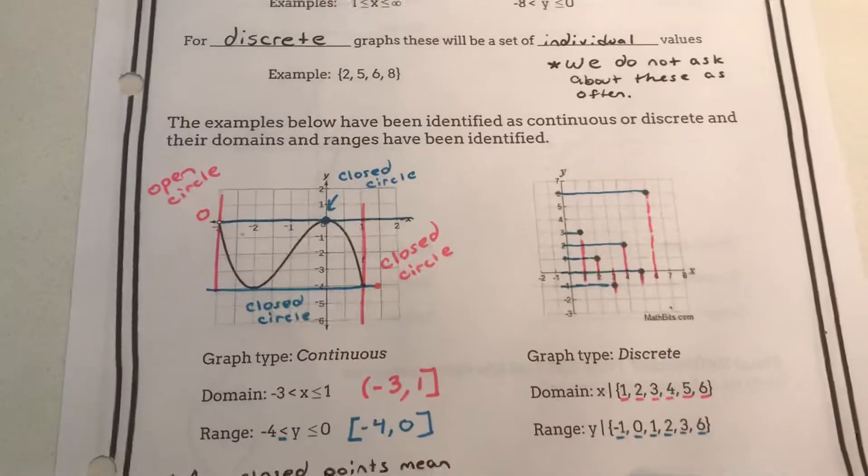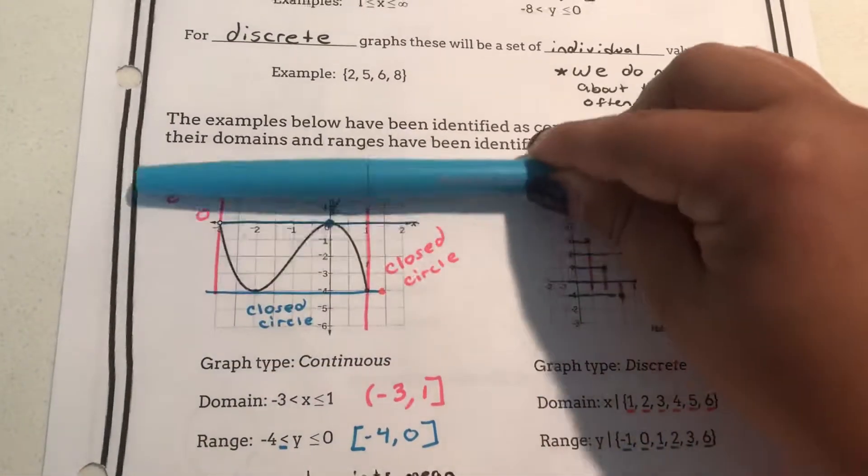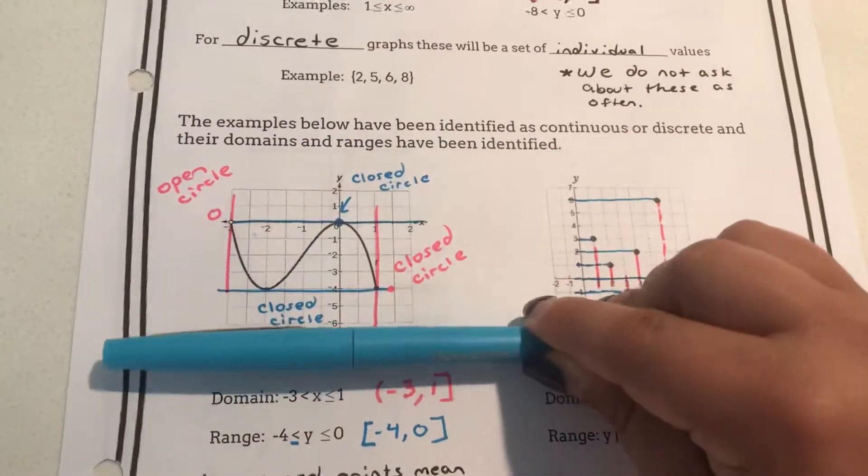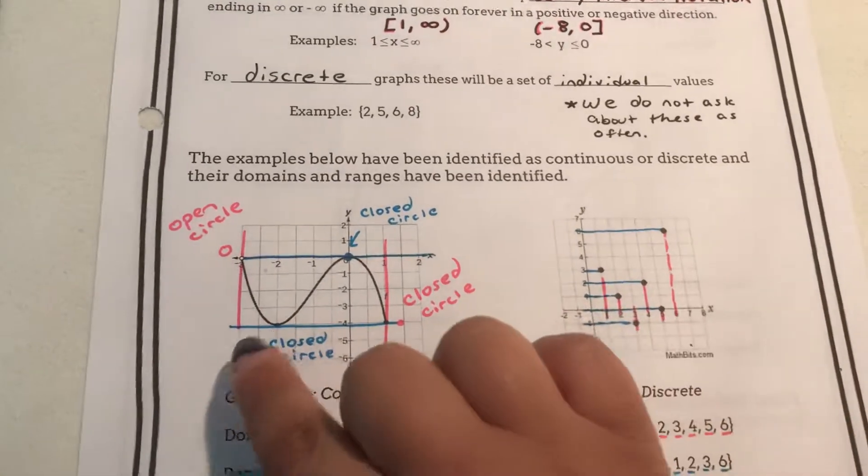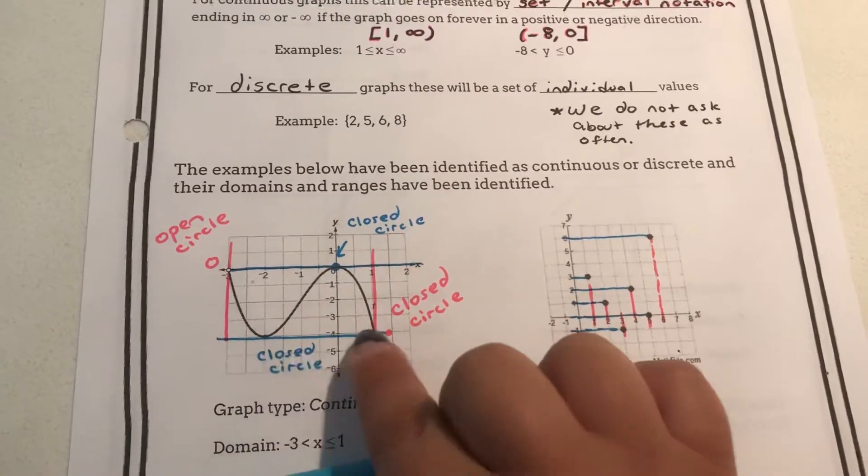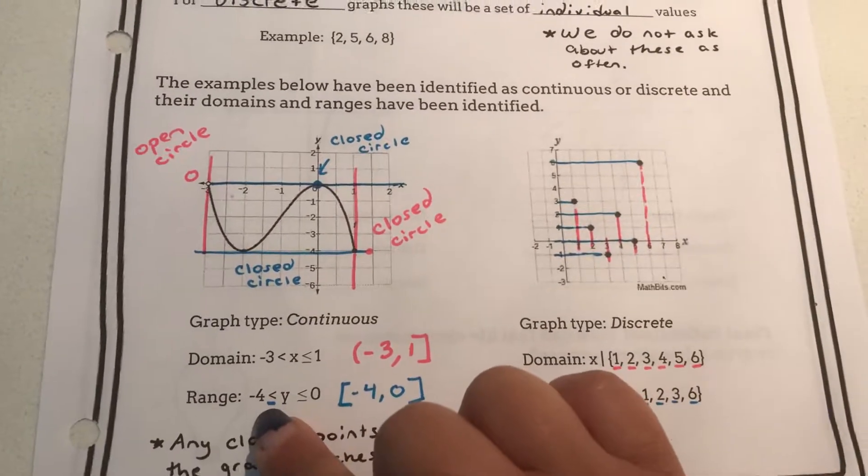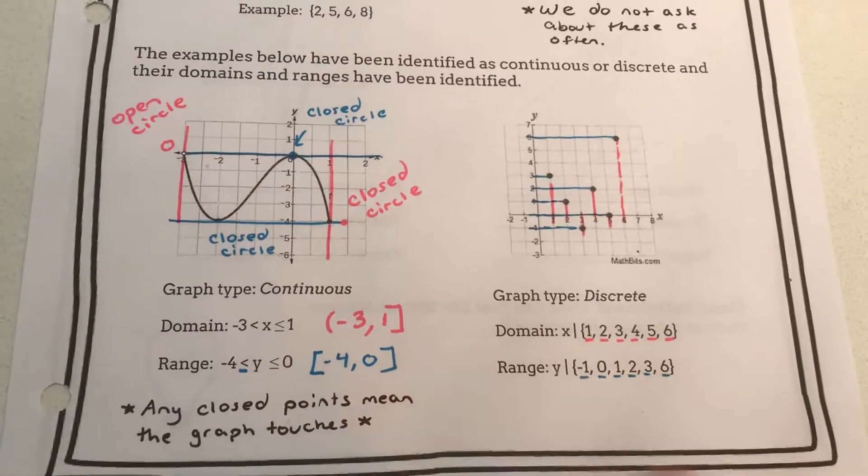I then needed to do range. For range we are going to rise up the graph from bottom to top. And the first time I touch the graph is at negative four, where I see there are two closed circles. So I know the graph is equal to negative four or has y values equal to negative four and would be a closed bracket.